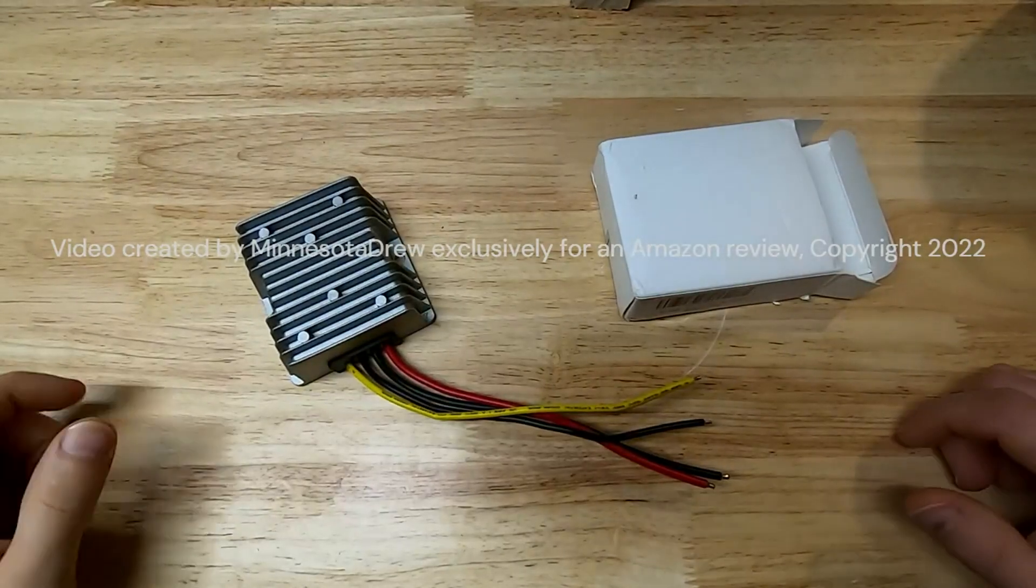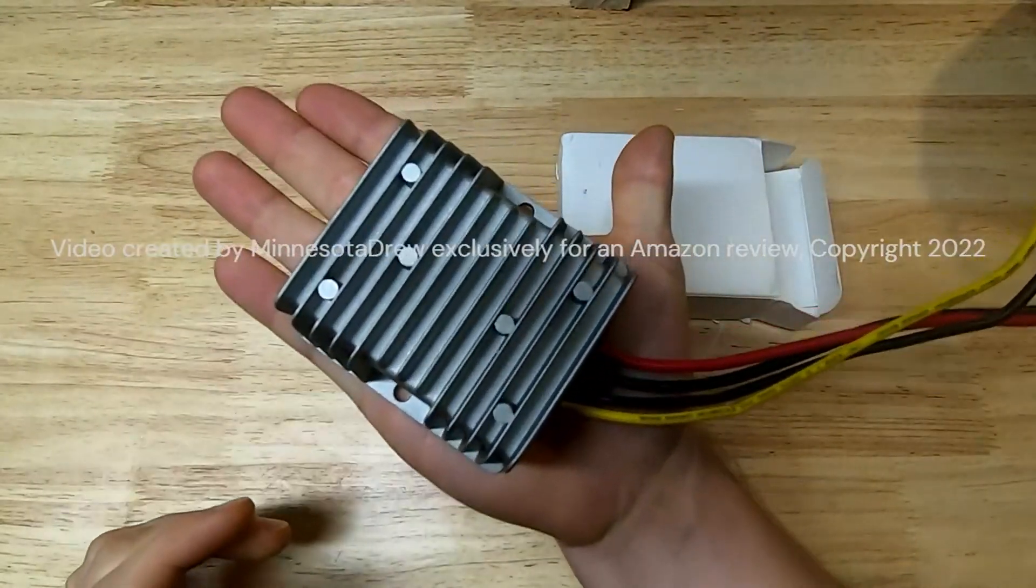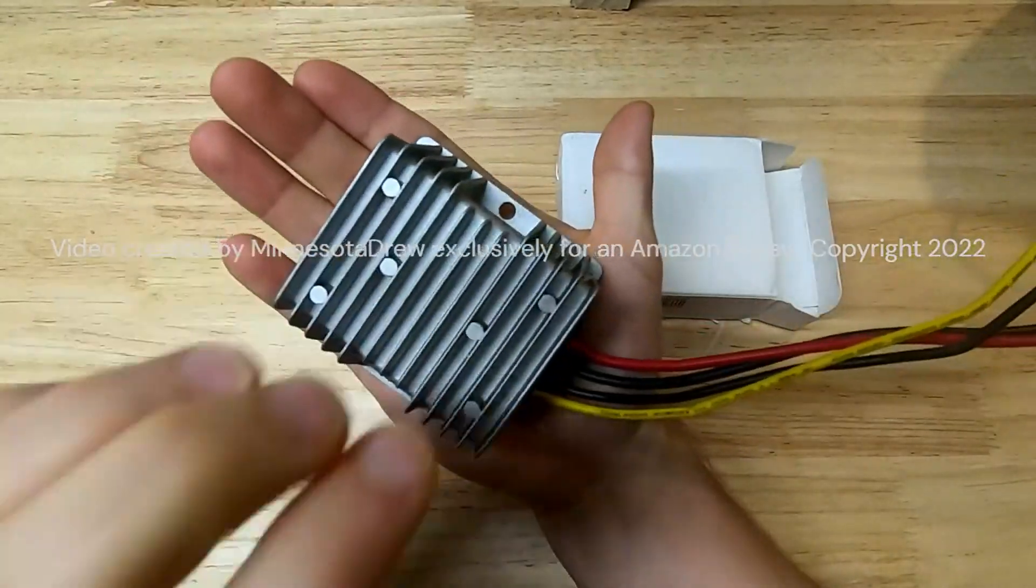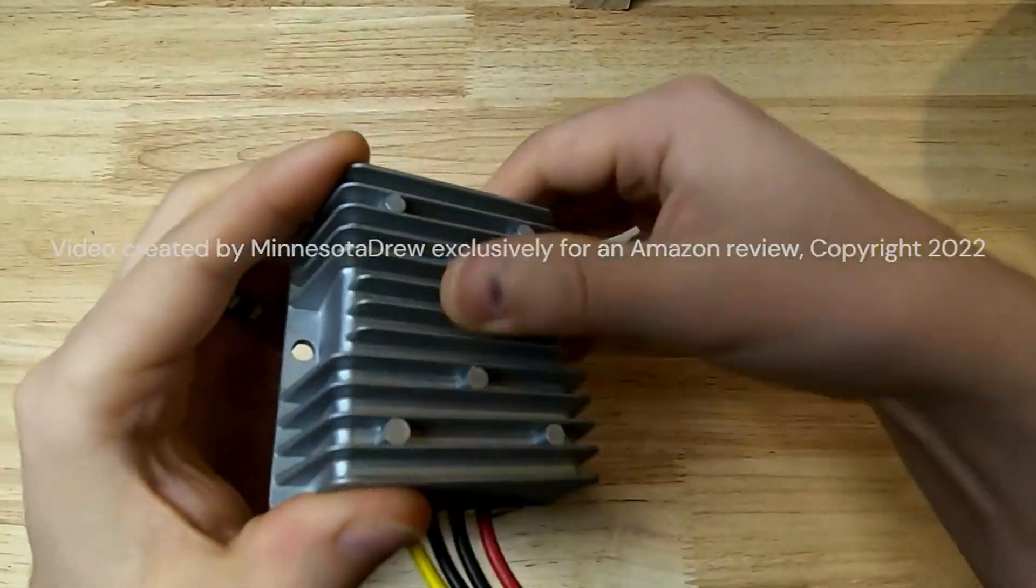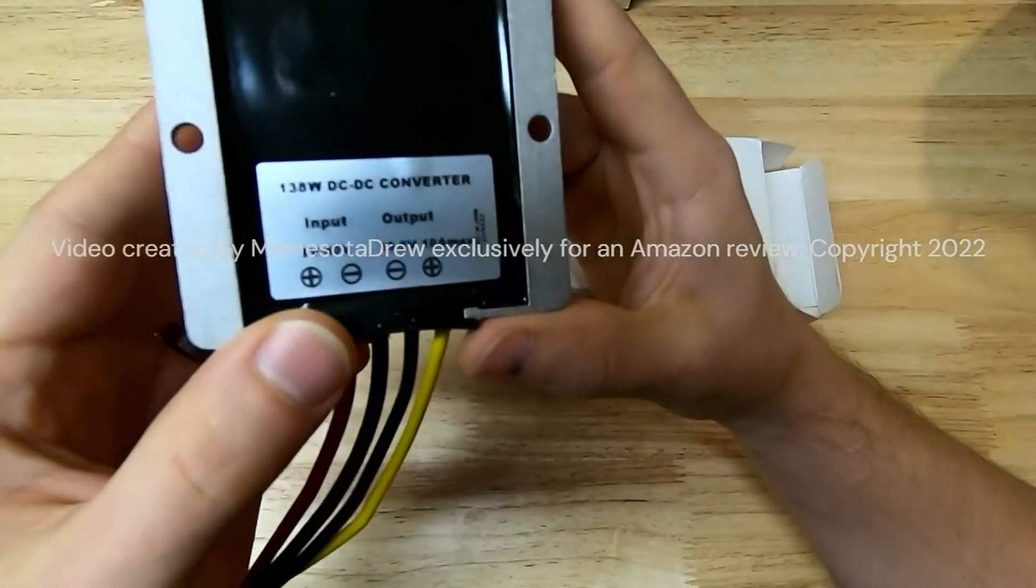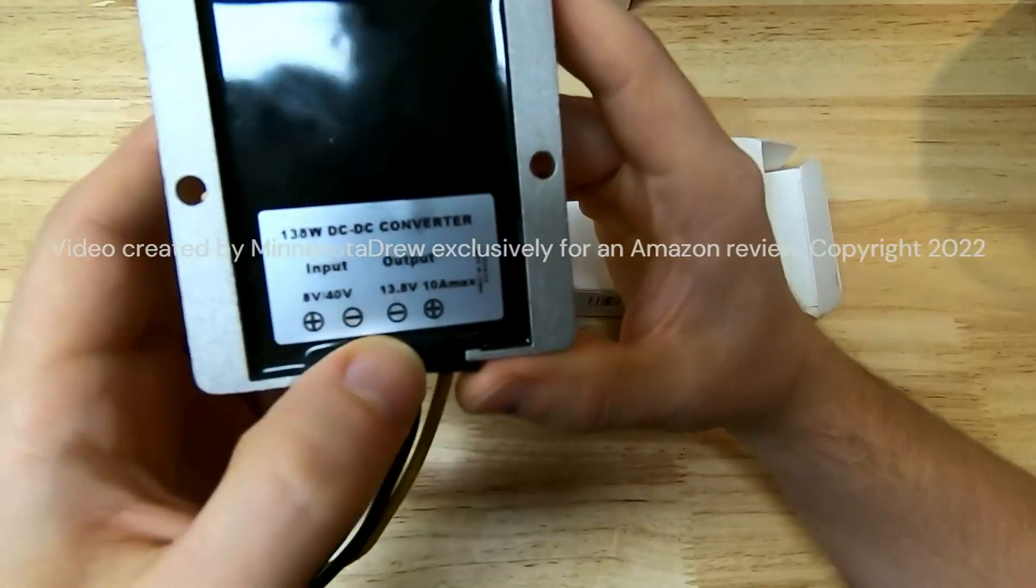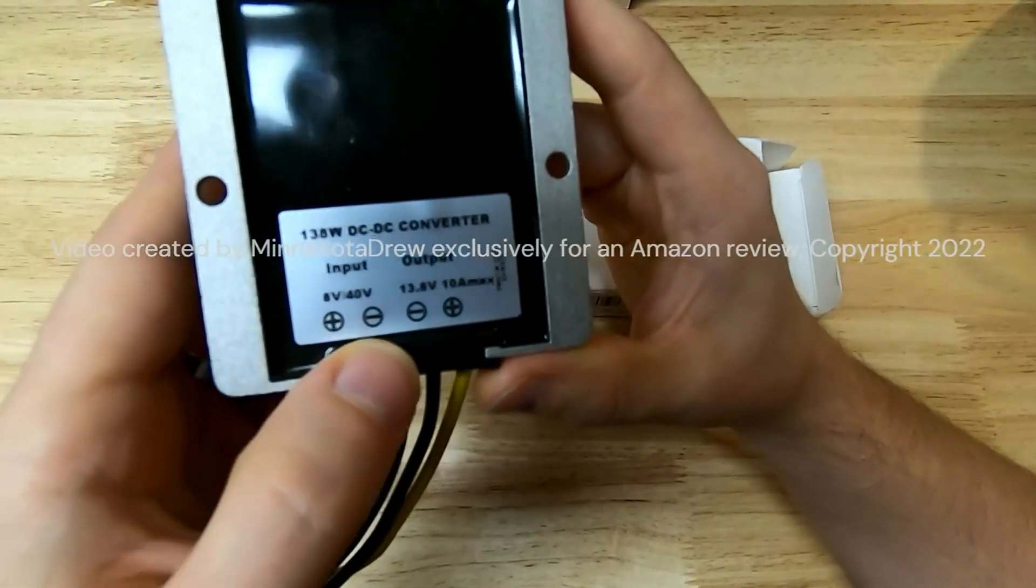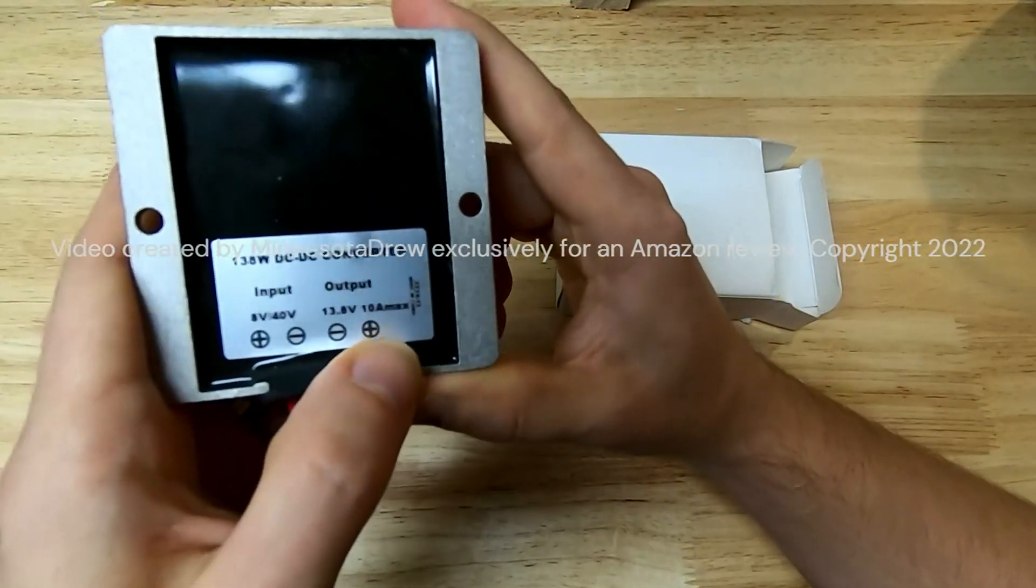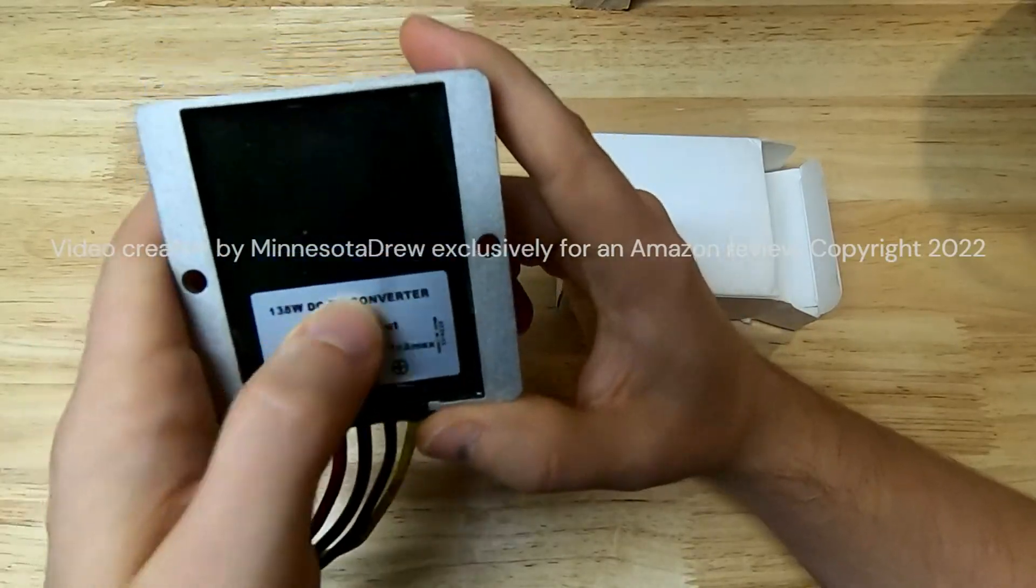All right, good morning. Today we're looking at a small power regulating device. It's in a nice aluminum shell with some heat fins to help dissipate heat. On the input side it says 8/40, meaning 8 to 40 volts input range, and the output is supposed to be 13.8 volts at up to 10 amps. It's a DC to DC converter.